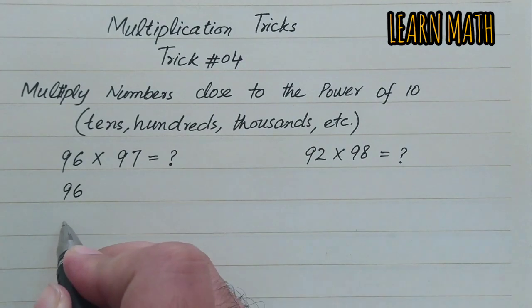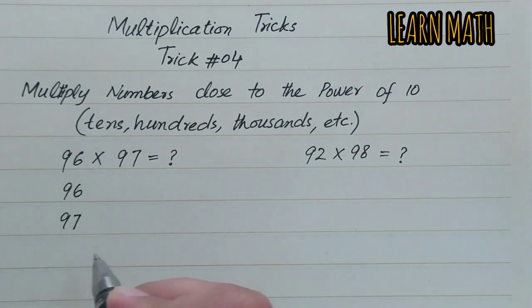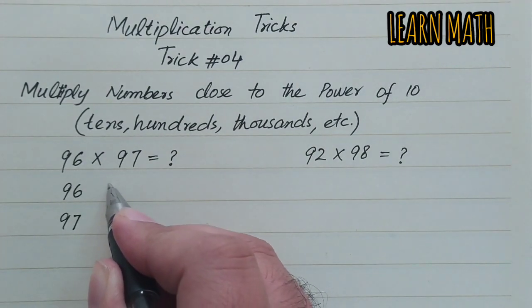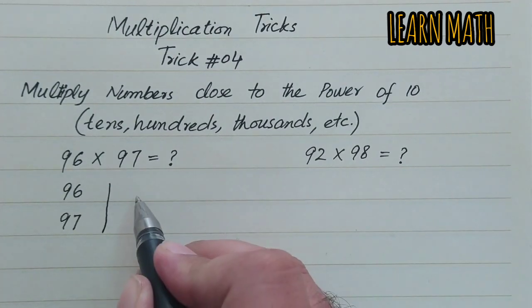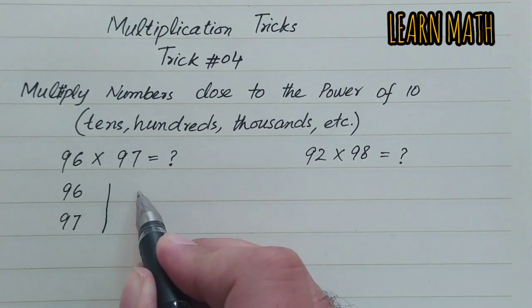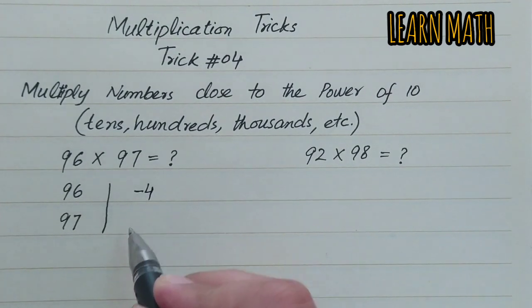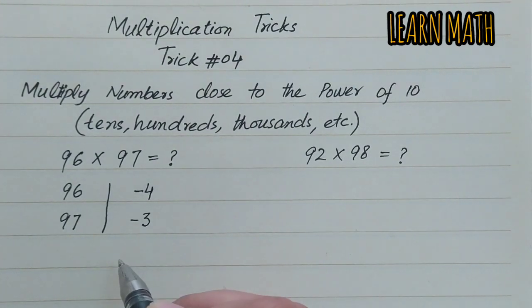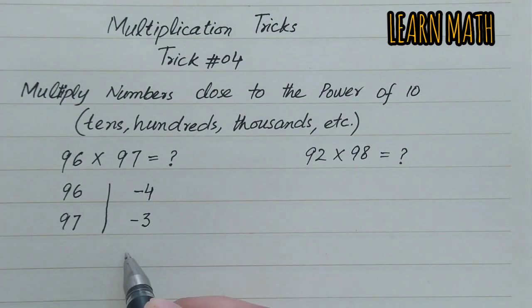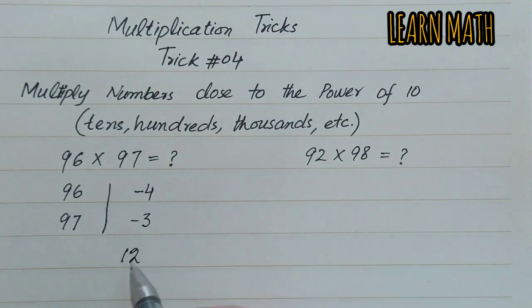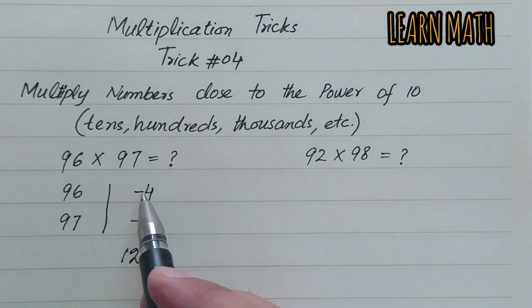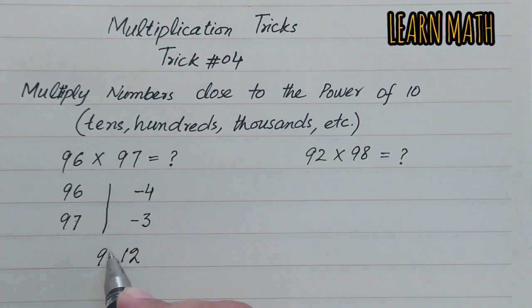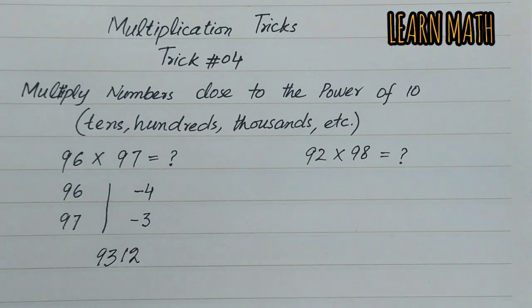We will subtract 100 from 96, so we get minus 4. Then we will subtract 100 from 97 and we will get minus 3. Now we will multiply minus 4 and minus 3, which is 12. Now, 96 minus 3 is 93, and 97 minus 4 is 93. So this is the answer: 9312.